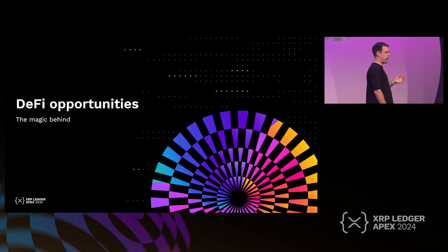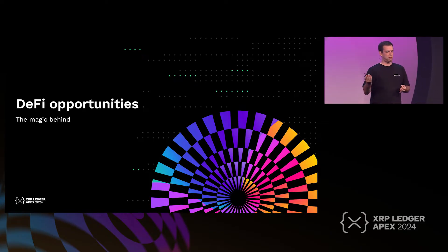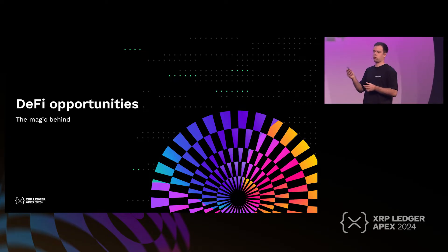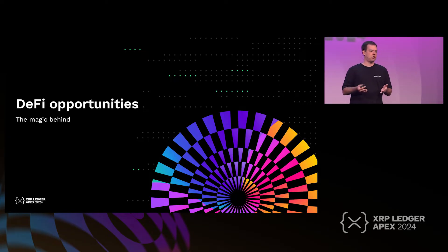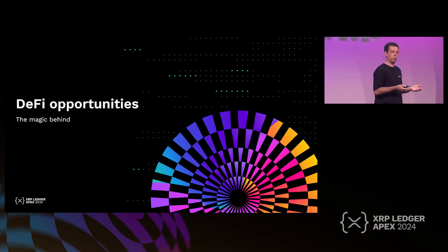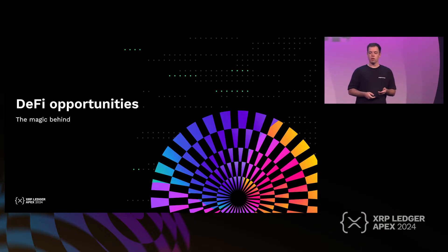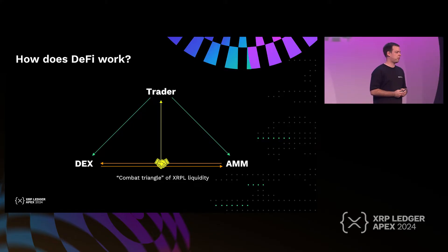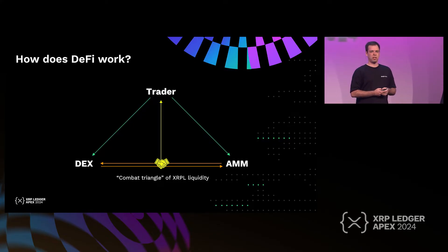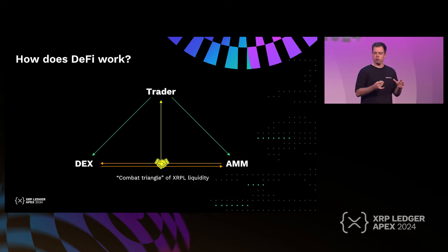DeFi opportunities — as I mentioned, and even David Schwartz mentioned today, DeFi is getting really hot. Just before going on stage, I checked and the total value locked on XRP Ledger has reached $12 million, which is an impressive amount, and $6 million of those is pure XRP. But DeFi is a little bit tricky, especially if you're a new user, and something you should understand is how big it is and how interlinked.